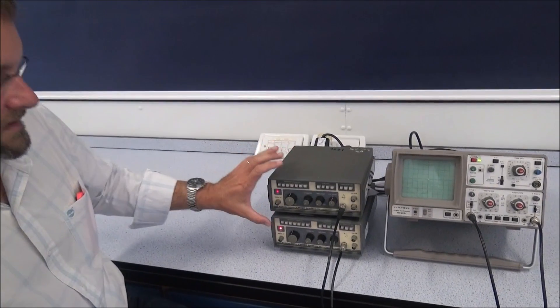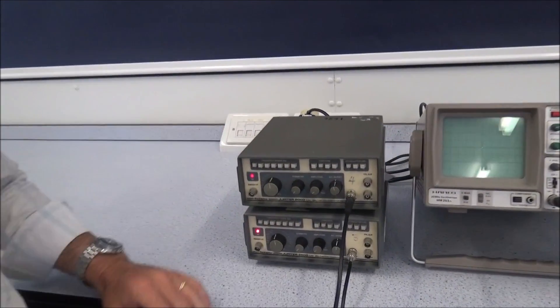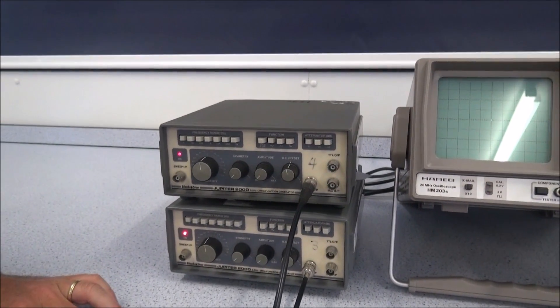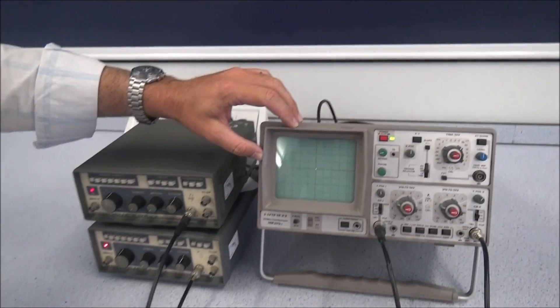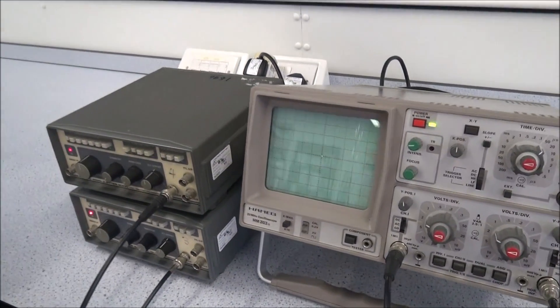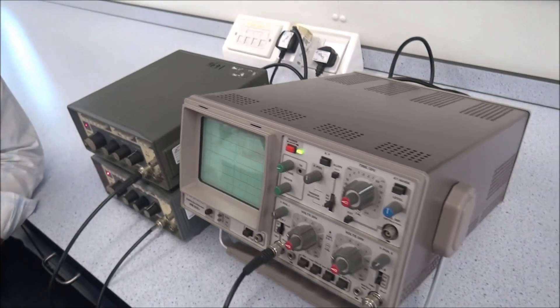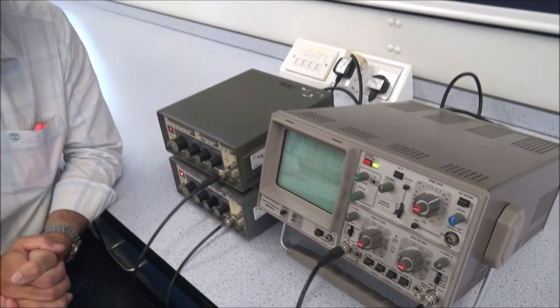So all you need are two signal generators, preferably as identical as you can get, but it's not the end of the world if they're not. These are just two old ones that we don't use for much else. And an oscilloscope. No reason on the face of it why you can't use a digital one, but I find they can sometimes be a little bit tricky in certain situations, so I prefer to go a bit old school at this point.